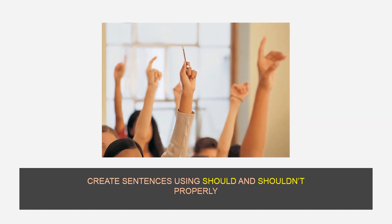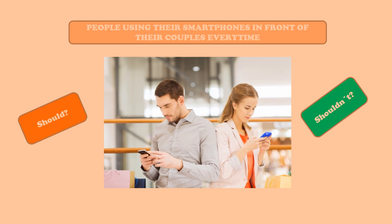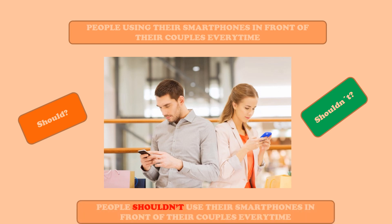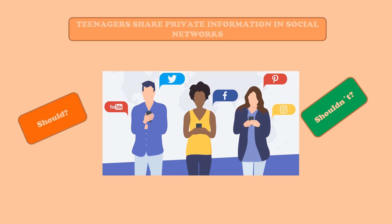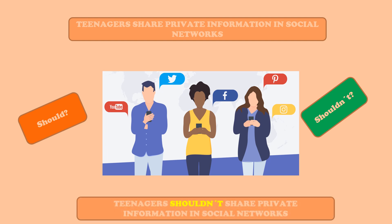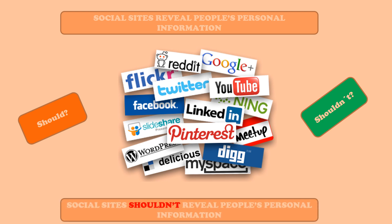Now let's see more examples. Create sentences using Should and Shouldn't properly. First situation: people using their smartphones in front of their couples every time. Recommendation: People shouldn't use their smartphones in front of their couples every time. Second situation: teenagers share private information in social networks. Recommendation: Teenagers shouldn't share private information in social networks.